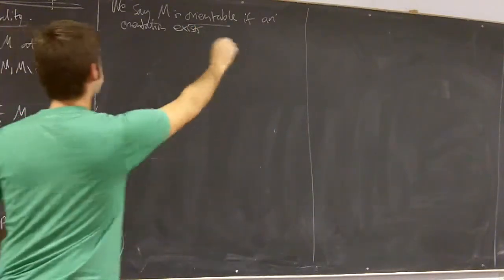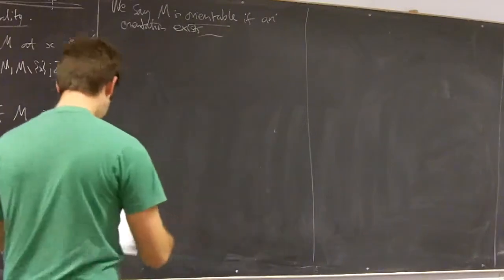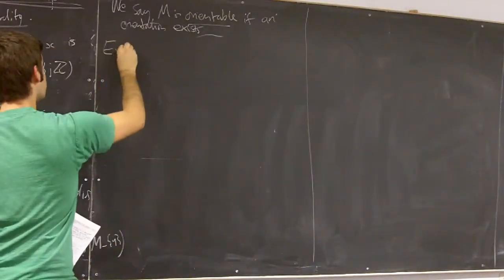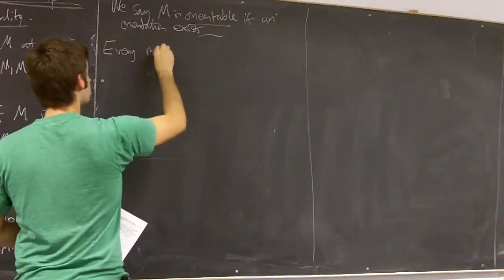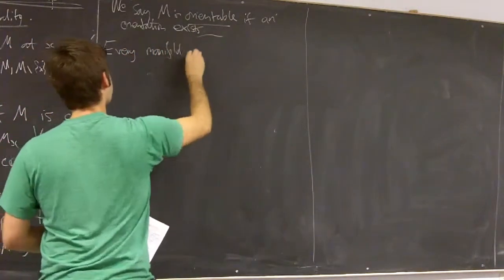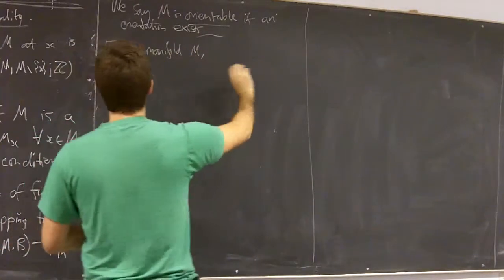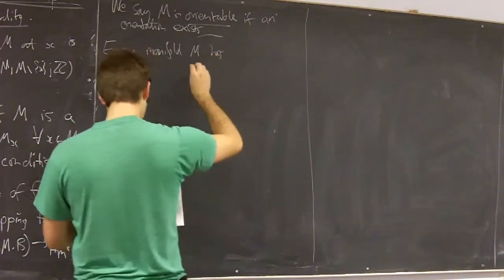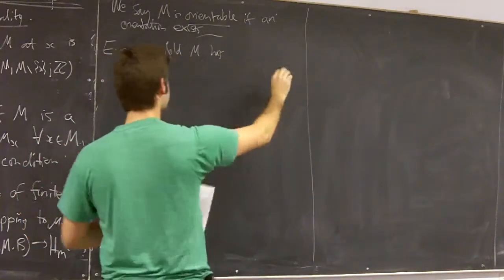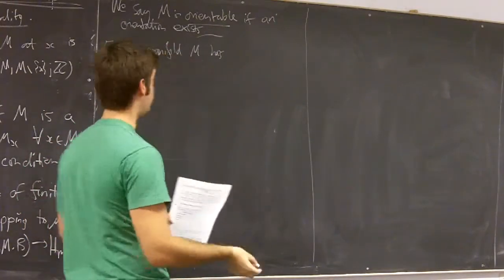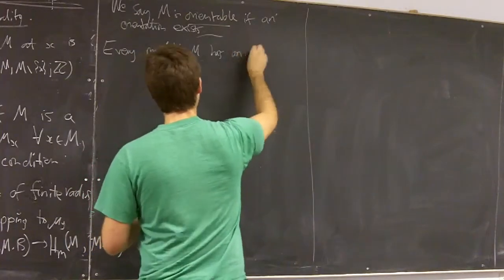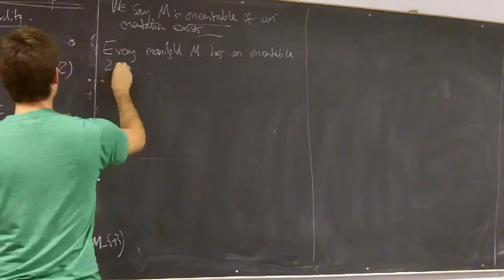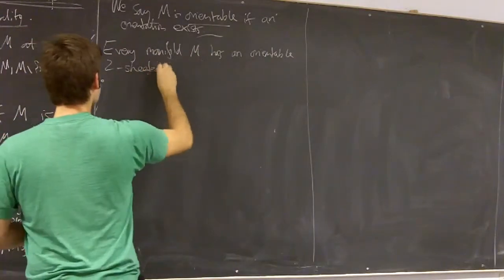Okay, now if we take any manifold M there exists an orientable two sheet covering the orientation double cover of M every manifold M has orientable two sheeted cover